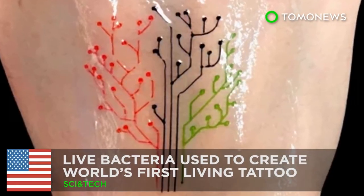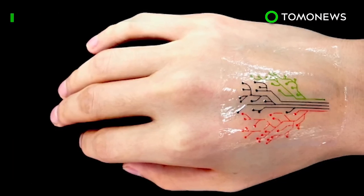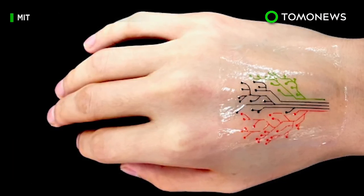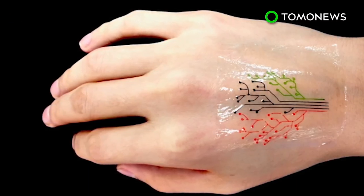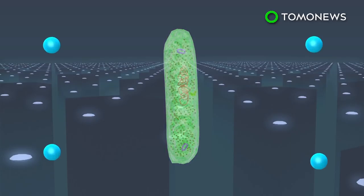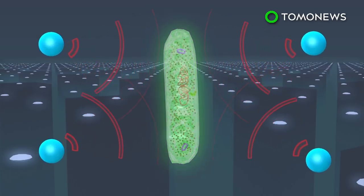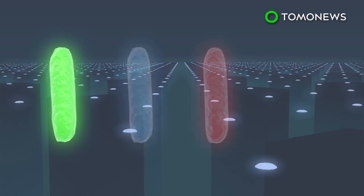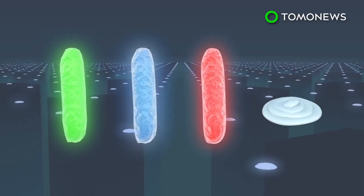It's alive! A team at MIT have successfully created the world's first living tattoo, using ink made from live bacteria. Engineers programmed bacterial cells to light up in response to different chemicals, then mixed them with hydrogel and cell-feeding nutrients to form a bio-ink.